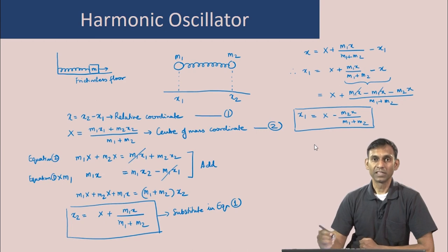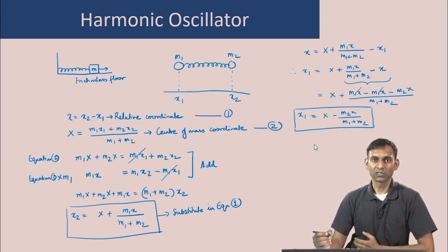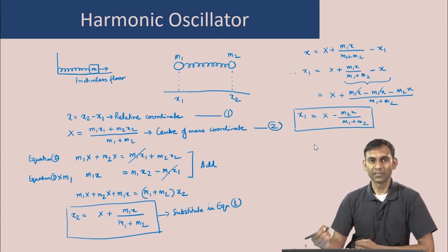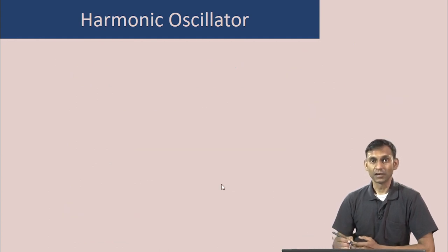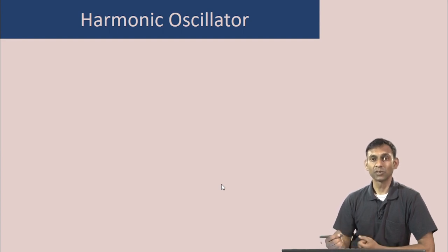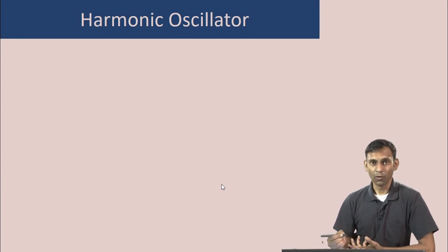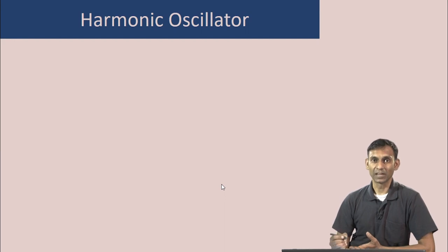So now we have expressions for the coordinates of the two masses in terms of the center of mass coordinate and the relative coordinate. Let us now consider what the Hamiltonian looks like for this two-mass system. The Hamiltonian has the kinetic energy operator and the potential energy operator. Let us start with the kinetic energy operator.